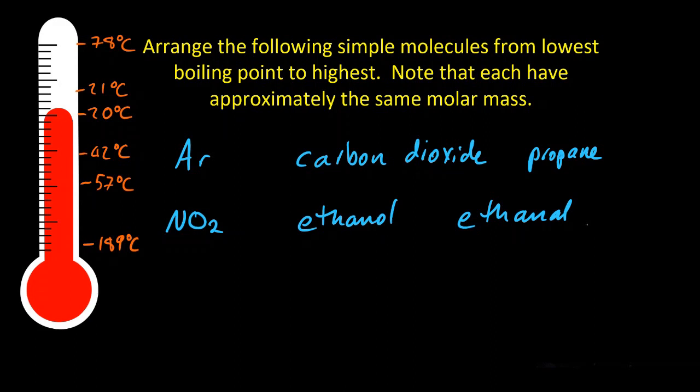Arrange the following simple molecules from lowest boiling point to highest. Anything with a low boiling point is going to be volatile, turns into a gas quite easily at low temperatures. And note that each of them have approximately the same molar mass.